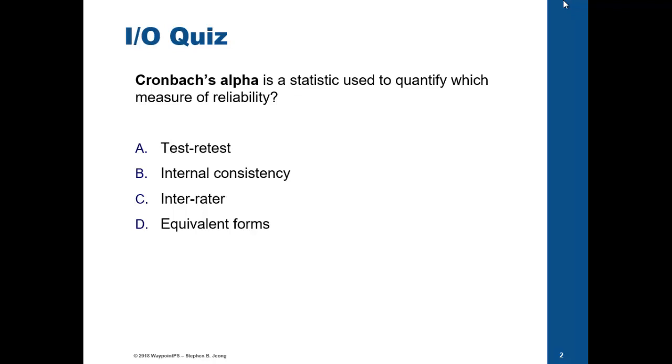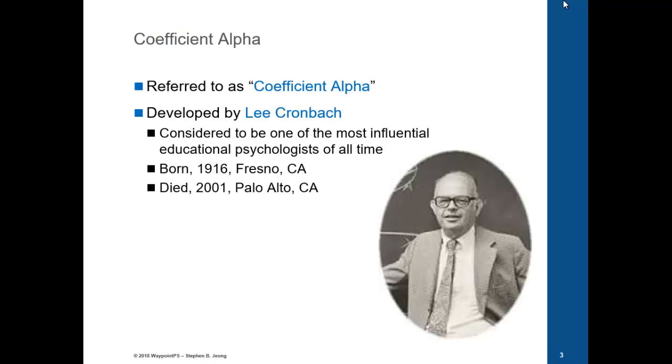Before we get started, let's take a quick quiz. Cronbach's Alpha or Coefficient Alpha is a statistic used to quantify which measure of reliability? A. Test-retest. B. Internal consistency. C. Inter-rater. Or D. Equivalent forms. See if you can guess which one. I'll come back towards the end of the video to give you the answer.